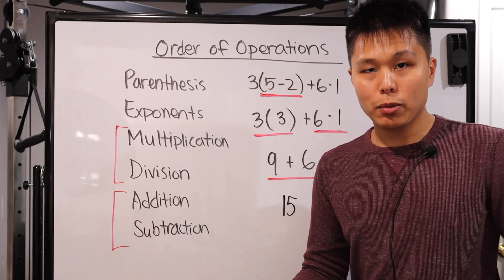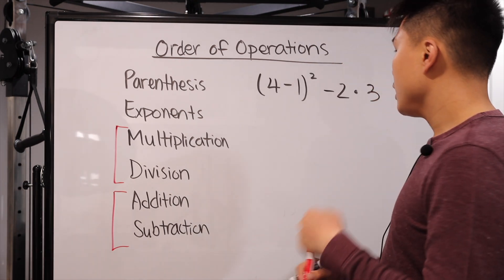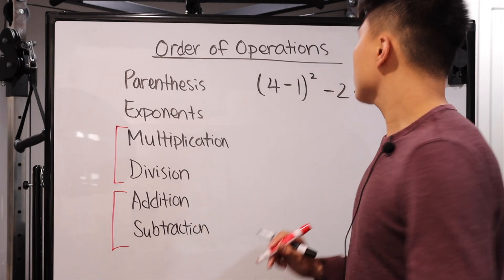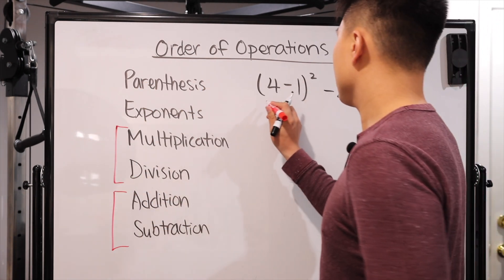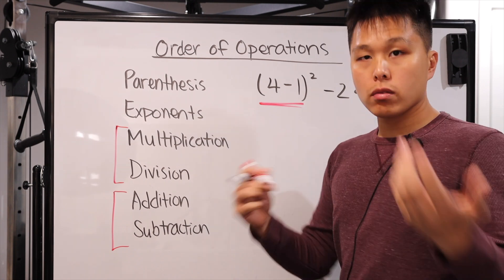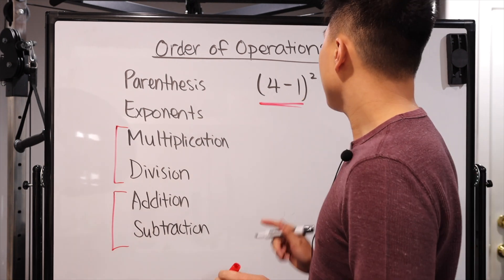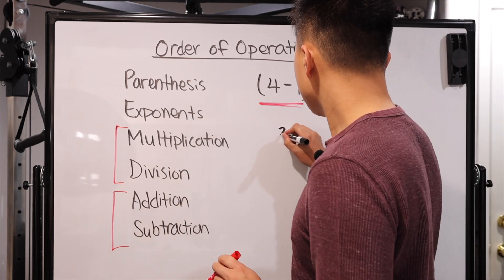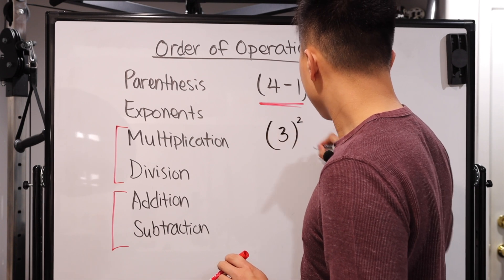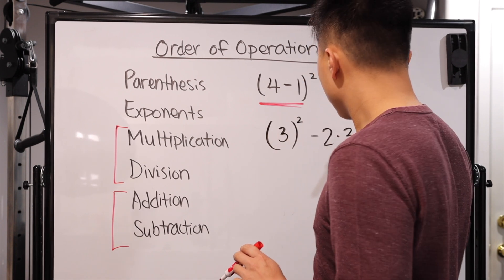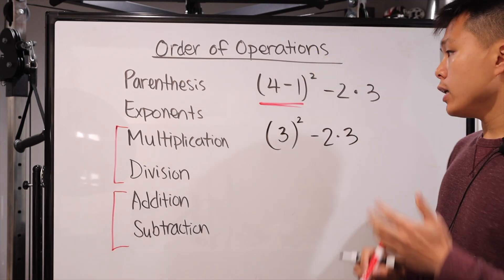Let's look at another example. Here's our second example with slightly a little more so that you can see it all in action. First and foremost, once again, parentheses. There is a parentheses here. So we're going to solve inside the parentheses. 4 minus 1 is 3. So we have 3 with the parentheses still, and then now we have the rest of the problem.